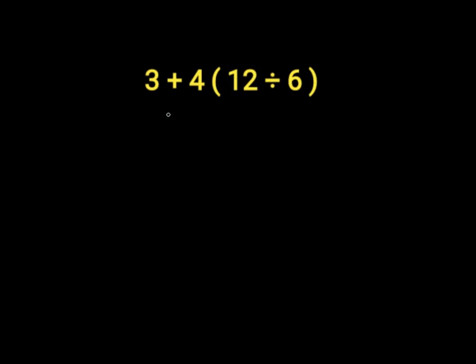3 plus 4 will give us 7. Then we have 7 parenthesis 12 divided by 6. In our parenthesis, 12 divided by 6 will give us 2. Then we have 7 times 2. 7 times 2 is equal to 14, which is wrong because we did not work with the order of operations.